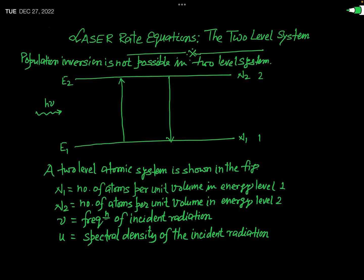In the previous lectures we discussed in detail Einstein's A and B coefficients, and the possibility of amplification of light. When stimulated emission dominates over spontaneous emission, amplified light is obtained. The necessary condition for light amplification is population inversion. But how this population inversion will be possible in a laser system, and what should be the level structure of the atomic system?